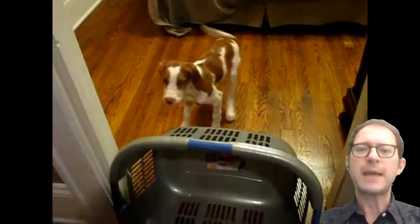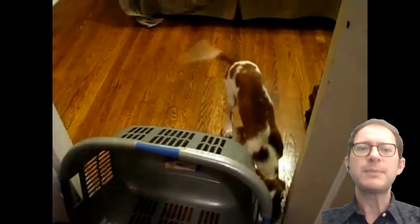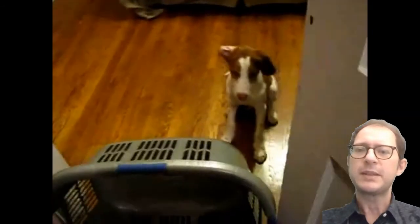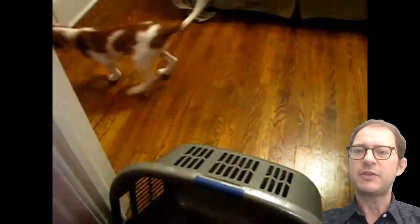A proponent of cognitive maps would say that the puppy knows the map of the apartment and can figure out an alternative way to reach the owner. Here we will see the puppy going to his right and reach the owner through another door. There he goes.